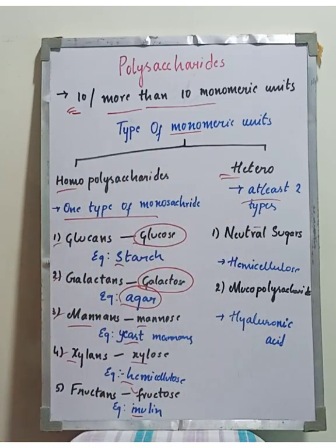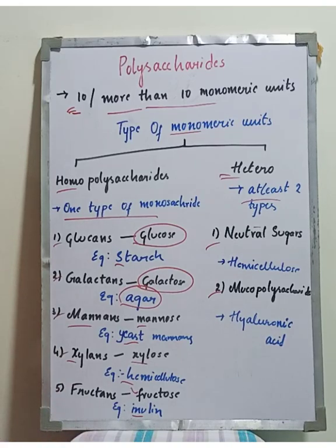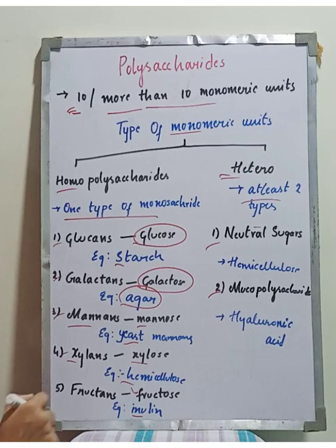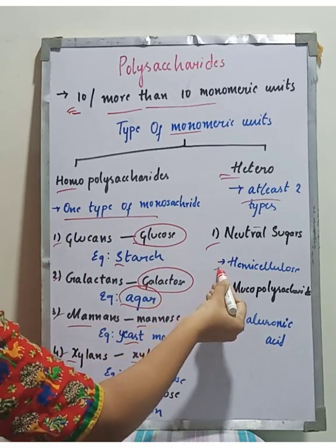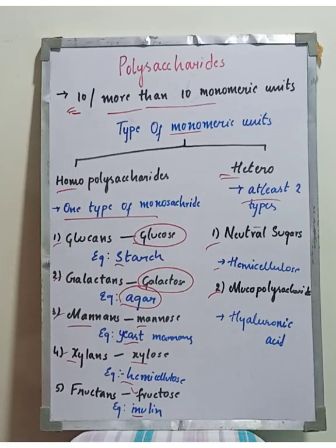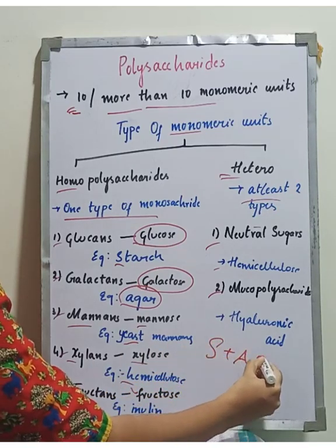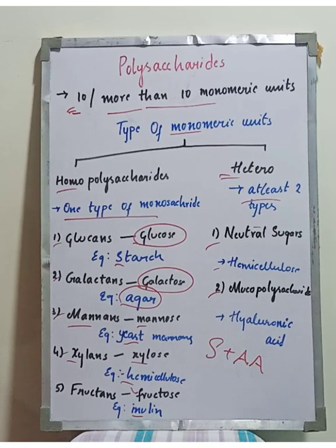Heteropolysaccharides are classified as neutral sugars and mucopolysaccharides. Neutral sugars are carbohydrates containing only sugar molecules, for example hemicellulose. Mucopolysaccharides contain a combination of sugar and amino acid units; an example is hyaluronic acid.